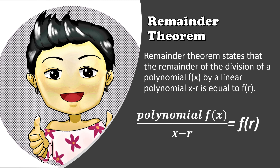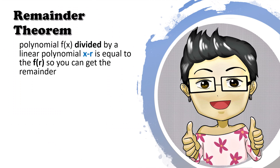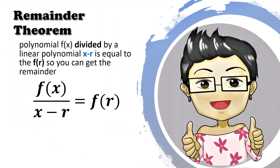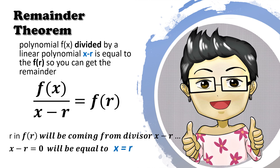In this illustration, when you divide a polynomial by a linear polynomial, it's going to be equal to f of r. When a polynomial is divided by a linear polynomial in the form of x minus r, it's going to be equal to f of r. The question is, saan magagaling yung r na nandito? The value will be coming from the divisor, which is x minus r.